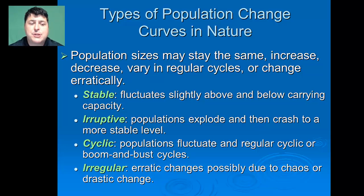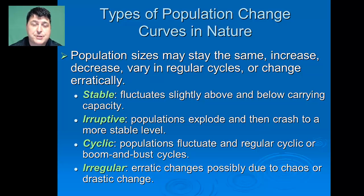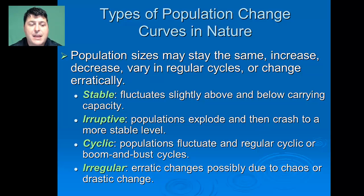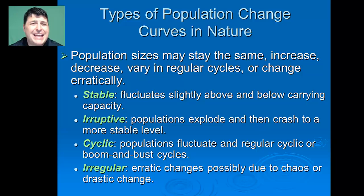Cyclical populations fluctuate at regular intervals with boom and bust cycles. This is especially true of predator-prey interactions — as predators eat the prey, the prey die back, then so do the predators, and vice versa. Some populations have more irregular population changes, typically due to major drastic changes in the environment, and these are harder to predict in terms of what will happen to those populations into the future.